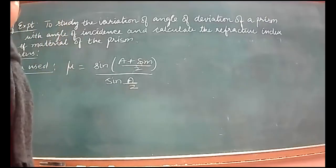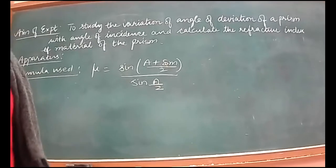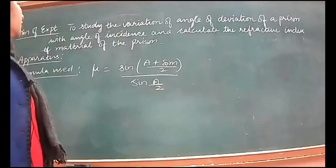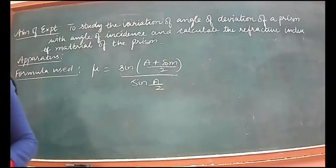The aim of the experiment, this is experiment one of term two, is to study the variation of angle of deviation of a prism with angle of incidence and calculate the refractive index of material of the prism. We'll be using the prism formula for the same that we derived when we did ray optics.